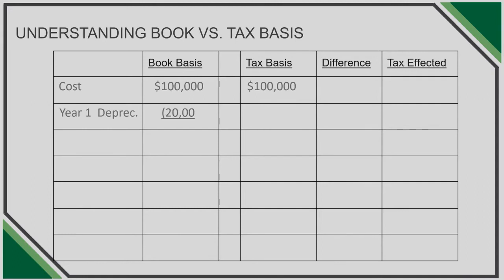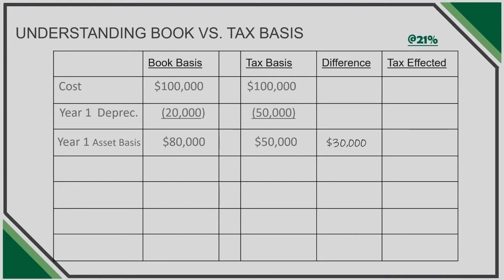Once we apply year 1 depreciation amounts under both rules, we determine the book basis in our depreciable asset is $80,000 and the tax basis in our asset is $50,000. The net difference in basis amounts to $30,000. Utilizing a 21% effective tax rate, the tax-effected difference is $6,300. The value of our deferred on the financial statements should be presented as this tax-effected amount at $6,300. Since no difference in basis existed at the beginning of the year, our net change in the amount represented is also $6,300.